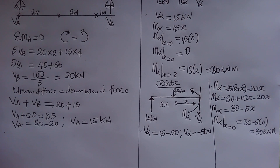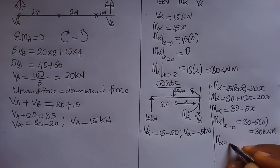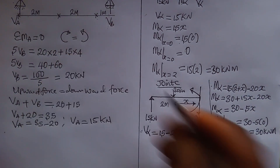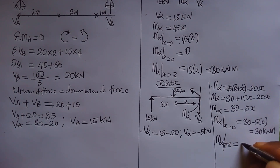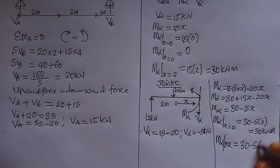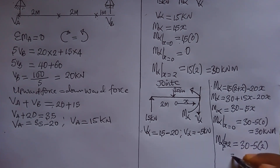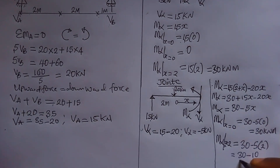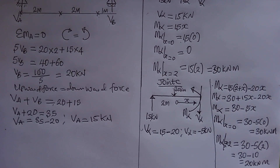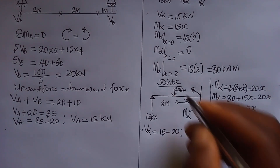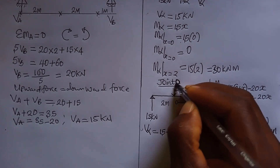Note that at point C the moment from the first expression gave 30 kNm, and now from the second expression at x = 0 we also get 30 kNm. Whenever your answers are not the same it means you are wrong somewhere, so check your steps again. This consistency confirms our calculation is correct.